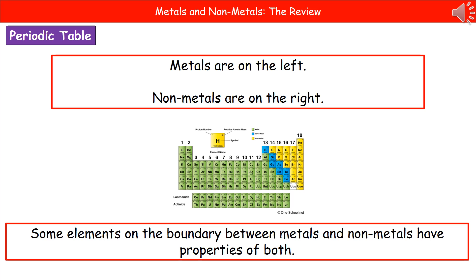Hopefully at the end of this video you know the difference between physical properties and chemical properties, and can recall some of those key properties for both metals and non-metals. You should also be able to recognise where to locate metals and non-metals on the periodic table.